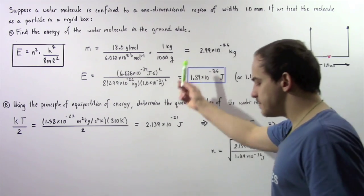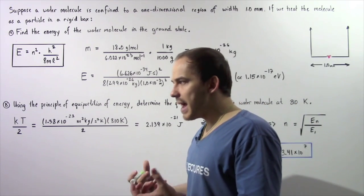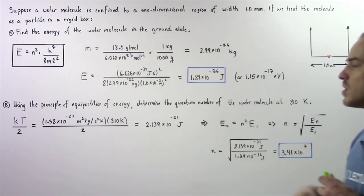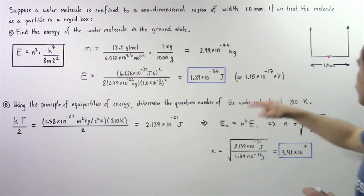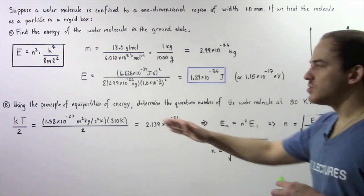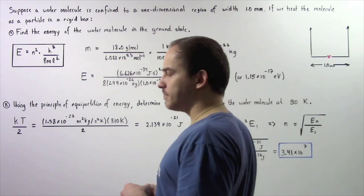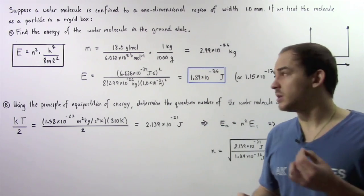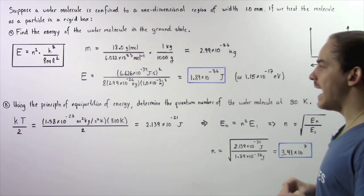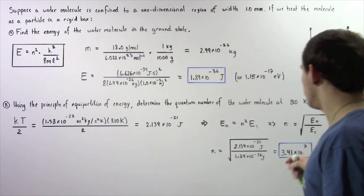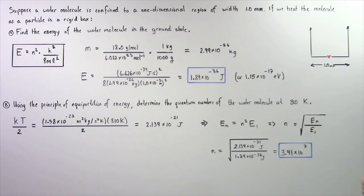This is the lowest amount of energy found in our water molecule when it's moving within this confined region of space. Next, we move on to part B, where we apply the principle of equal partition of energy to determine the quantum number of the water molecule at a temperature of 310 Kelvin.